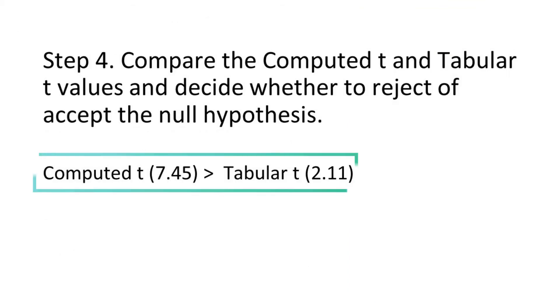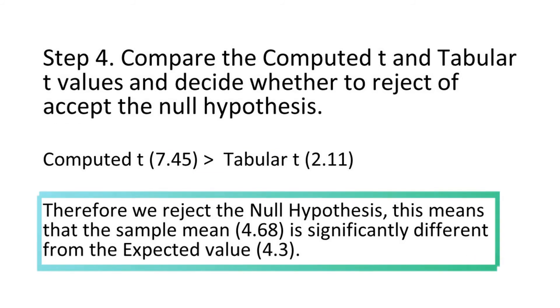The fourth step is to compare the computed t against tabular t. In this case, the computed t which is 7.45 is greater than the tabular t which is 2.11. This implies that we must reject the null hypothesis.